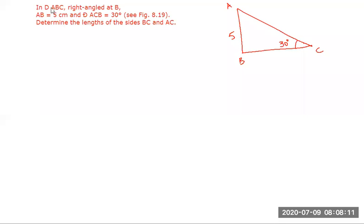First question: this is a triangle ABC, right angle at B, AB is 5, and angle ACB — that is angle C — is 30 degrees. Determine the length of sides BC and AC.